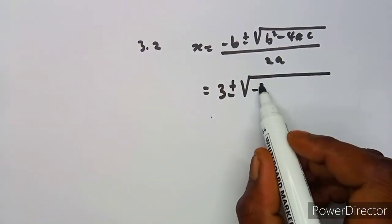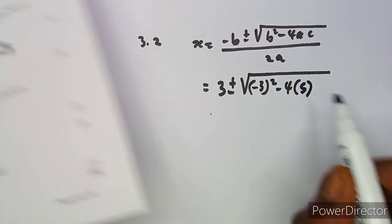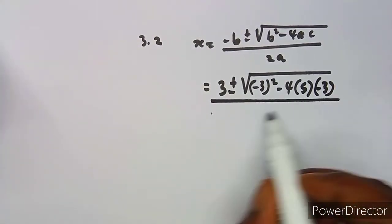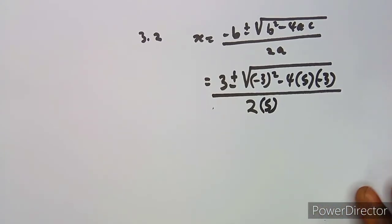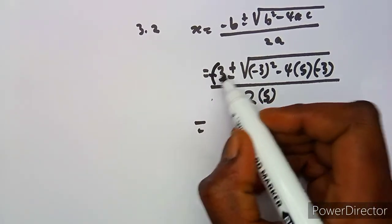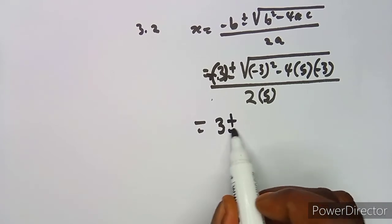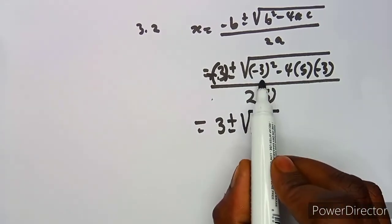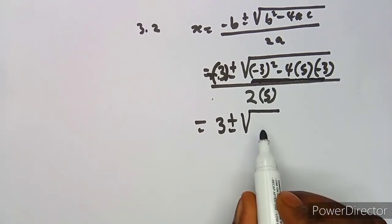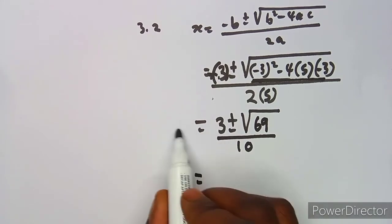Substituting into the formula: the two negatives give a positive, so we get x = (3 ± √((−3)² − 4×5×(−3))) / (2×5). Simplifying under the square root using your calculator gives 69, so x = (3 ± √69) / 10.